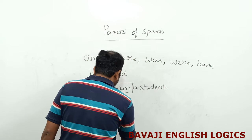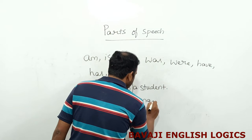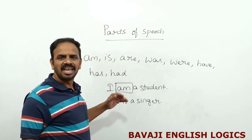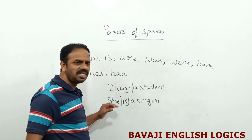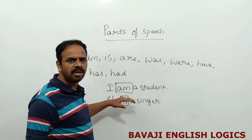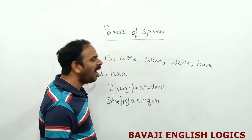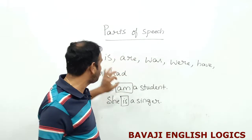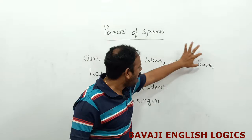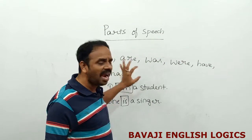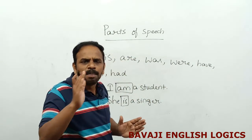She is a singer. In this sentence, is is the main verb because we don't find any other main verb in this sentence. So am, is, are, was, were, have, has, had — they can be used both as auxiliary verb as well as main verb. That is a very important point.